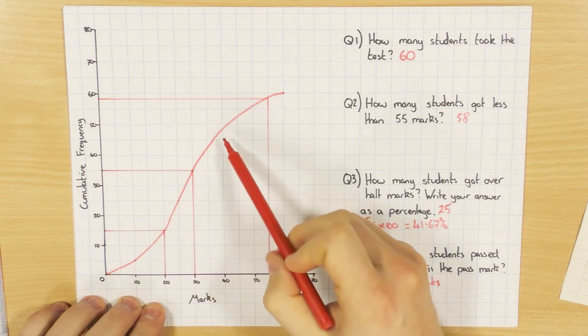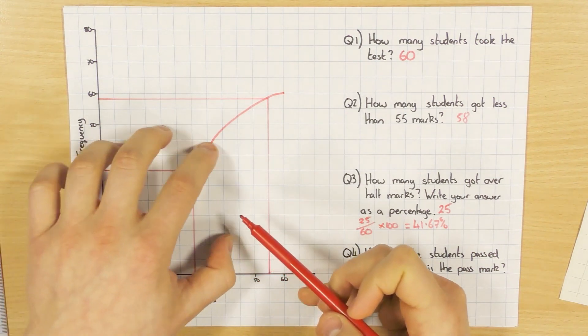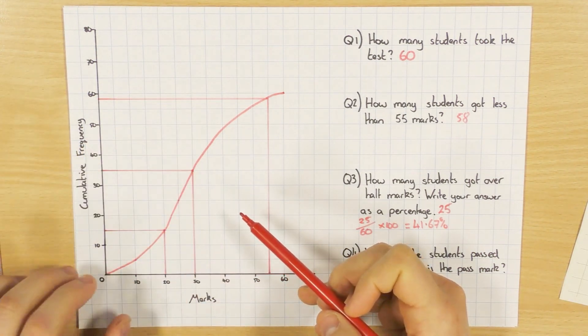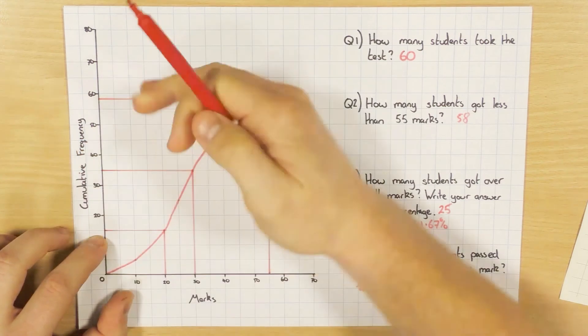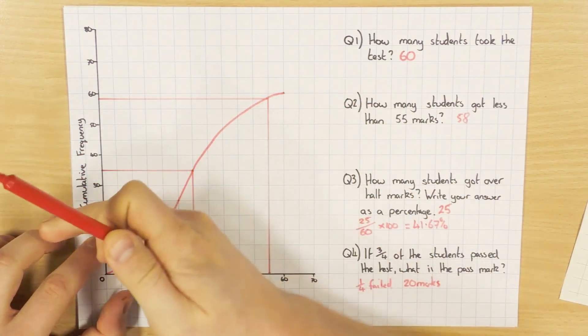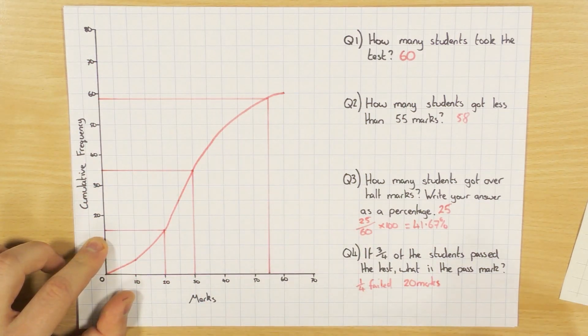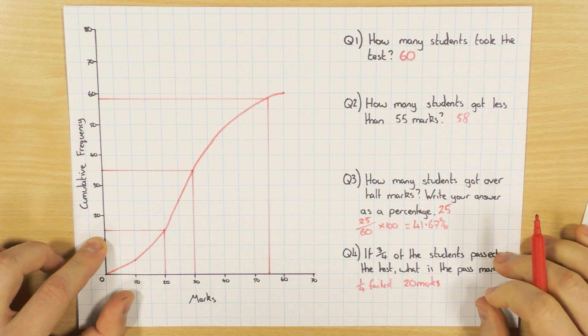So just make sure that you're being a bit careful there. If you find three-quarters down here, so go from 45 and across, that'll tell you three-quarters of the people who got below that, because you don't want that, you want to know how many three-quarters above that. So to work it out, we find a quarter, and then everyone above that has passed, everyone below that has failed, so a quarter would be 20 marks. So hopefully that makes sense.